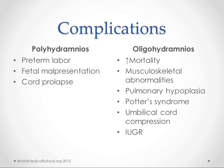Complications include preterm labor, fetal malpresentation, and cord prolapse — particularly with polyhydramnios. Oligohydramnios carries a greater increase in mortality and more problems overall, including musculoskeletal abnormalities and pulmonary hypoplasia. These latter two are part of Potter syndrome, which classically describes the characteristic facies, pulmonary hypoplasia, and musculoskeletal abnormalities associated with complete renal agenesis, though the term is now broadly applied to any oligohydramnios-related sequelae.